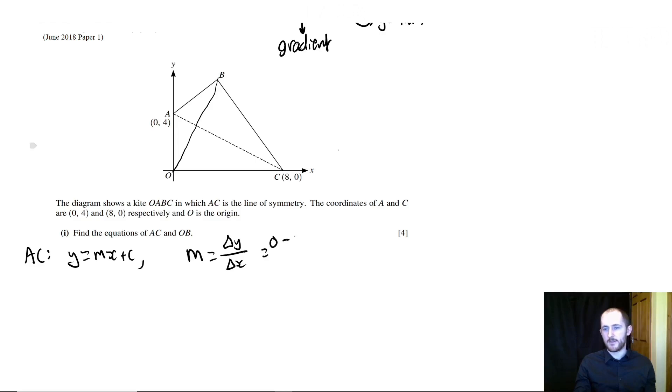So y ends up at 0, but it starts off at 4, so 0 minus 4, and x starts at 0 and ends at 8. So that's going to be minus 4 over 8, so be careful of the signs, which is minus a half. Now the y-intercept, you can just read from the graph, it's just 4.